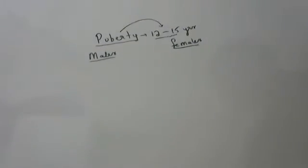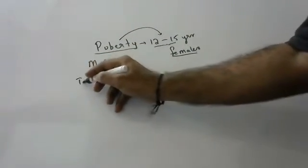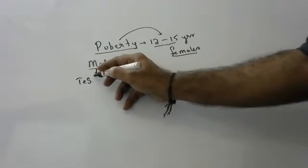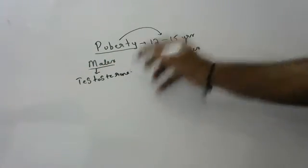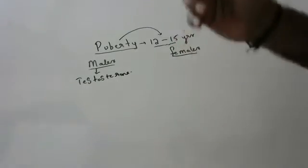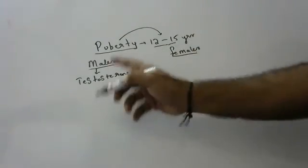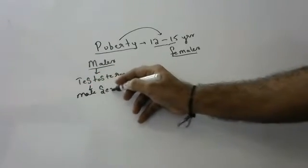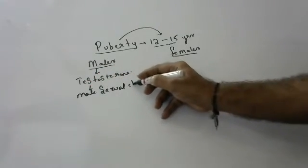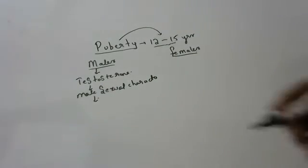In males, during puberty, all the male sexual characteristics occur because of release of hormone called testosterone. I hope all of you remember children, testes are the glands which release testosterone hormone. Testosterone is a hormone which helps in development of male sexual characteristics. The male sexual characteristics, it is in your textbook, you can go and see.